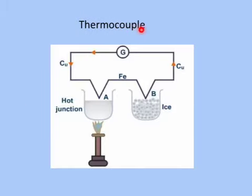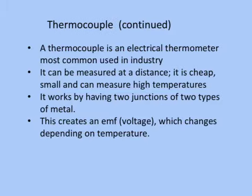A thermocouple consists of a circuit made up of two wires — one is iron, one is copper — with a very sensitive meter giving you the temperature reading. With the two junctions, one is cold and one is hot. A difference in temperature will cause a current flow in the circuit; the greater the difference in temperature, the greater the current. A thermocouple is an electrical thermometer most commonly used in industry. It can be measured at a distance, it is cheap, small, and can measure high temperatures. It works by having two junctions of two types of metal, which creates an EMF or a voltage that changes depending on temperature.